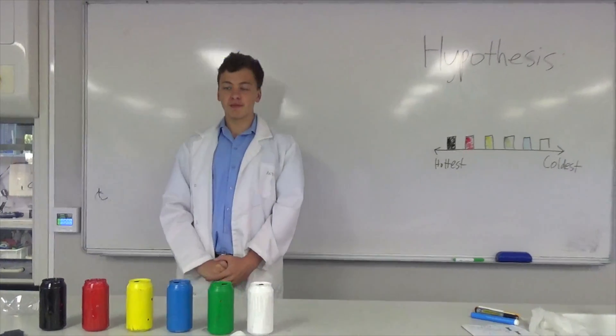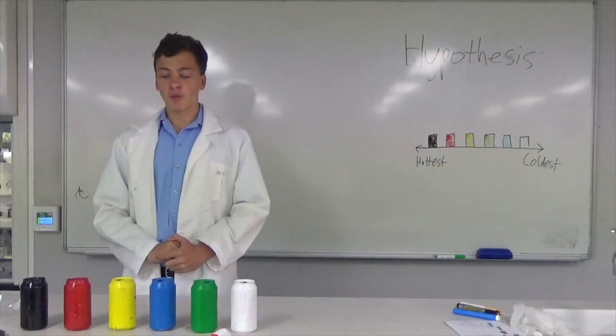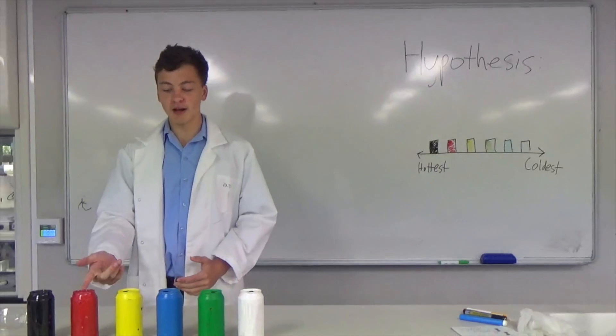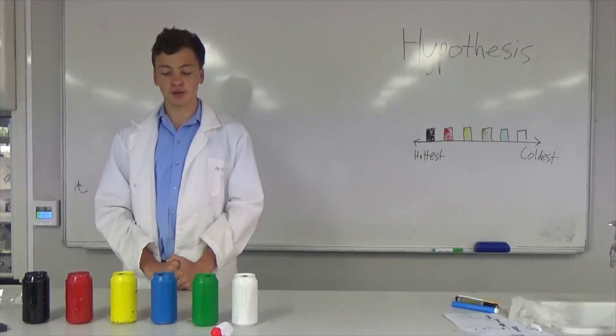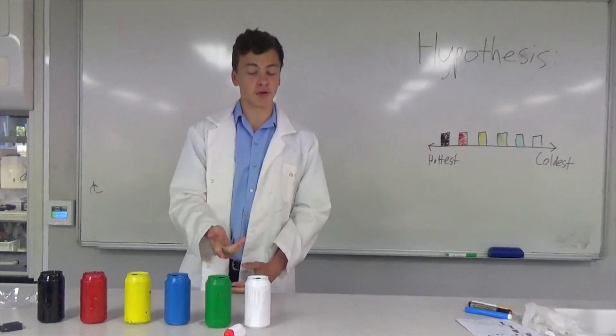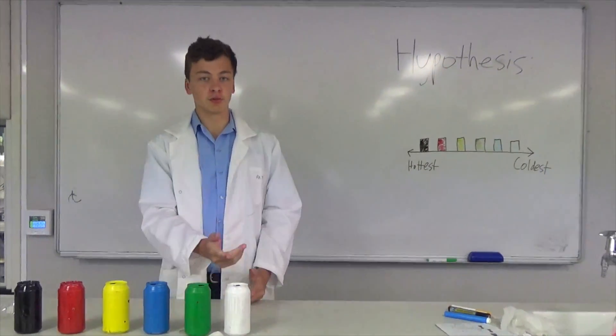From the research that we've gathered, we believe that the black will absorb the most heat. We also believe that the warmer colors, including red and yellow, will absorb a higher amount of heat compared to the cooler colors, including blue and green. Finally, we believe that white will absorb the least amount of heat.